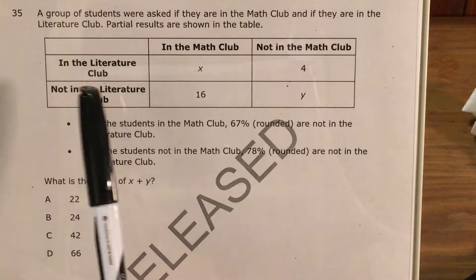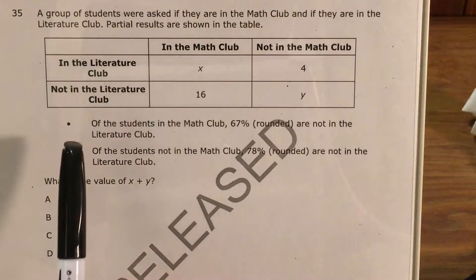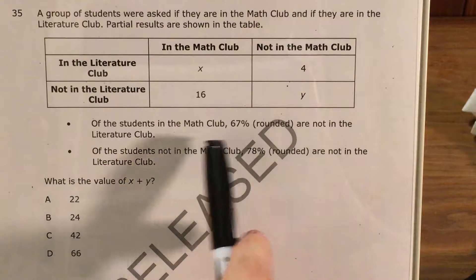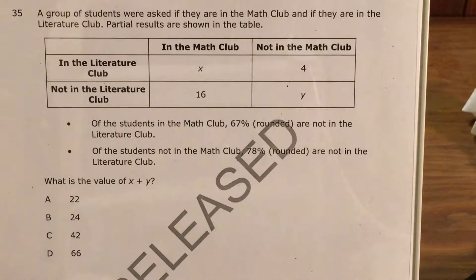The question gives us a table of students who are in the math club and not in the math club, in the literature club and not in the literature club, and it gives us some statements about what percent of students in the math club or not in the math club are or are not in the literature club.